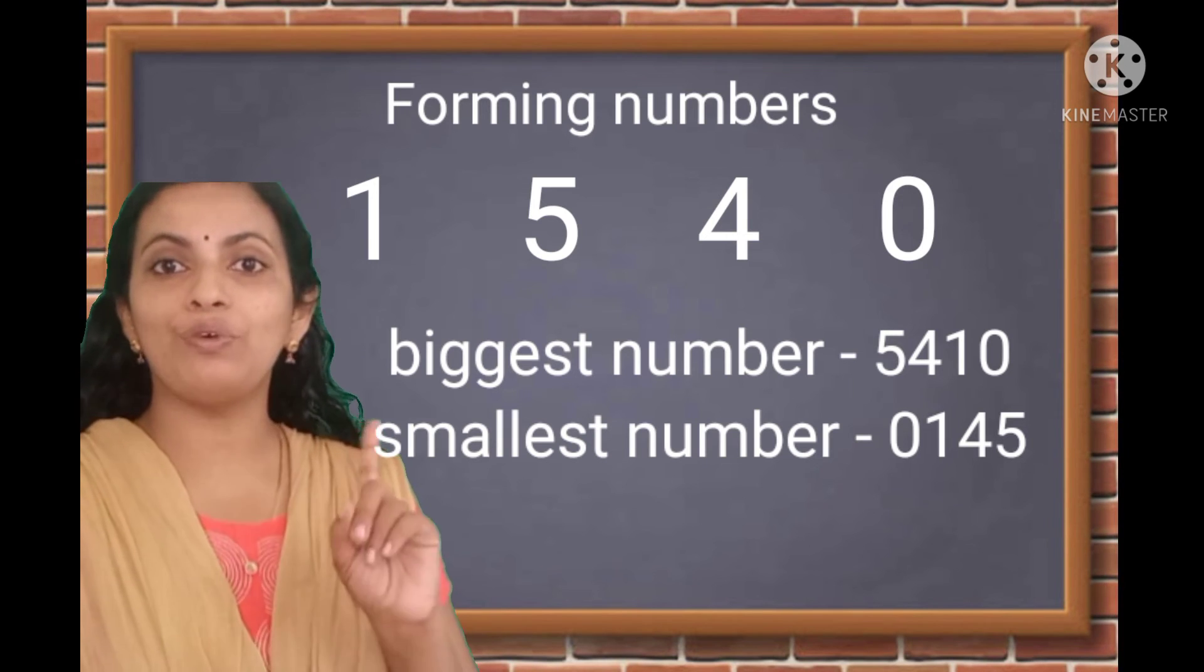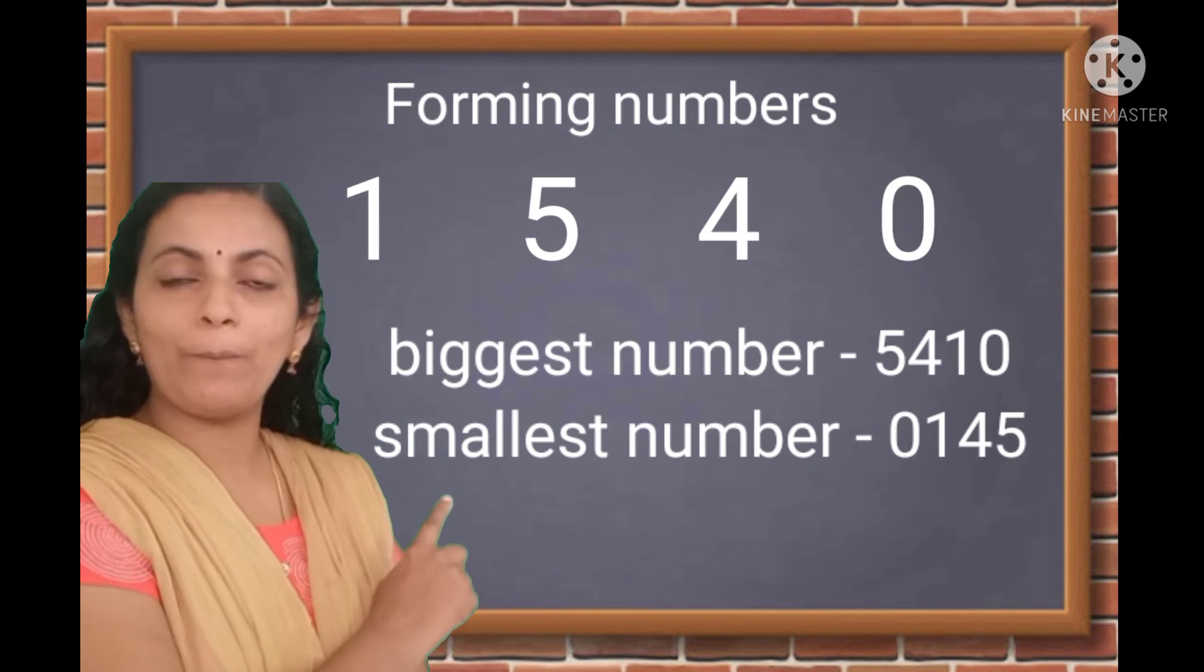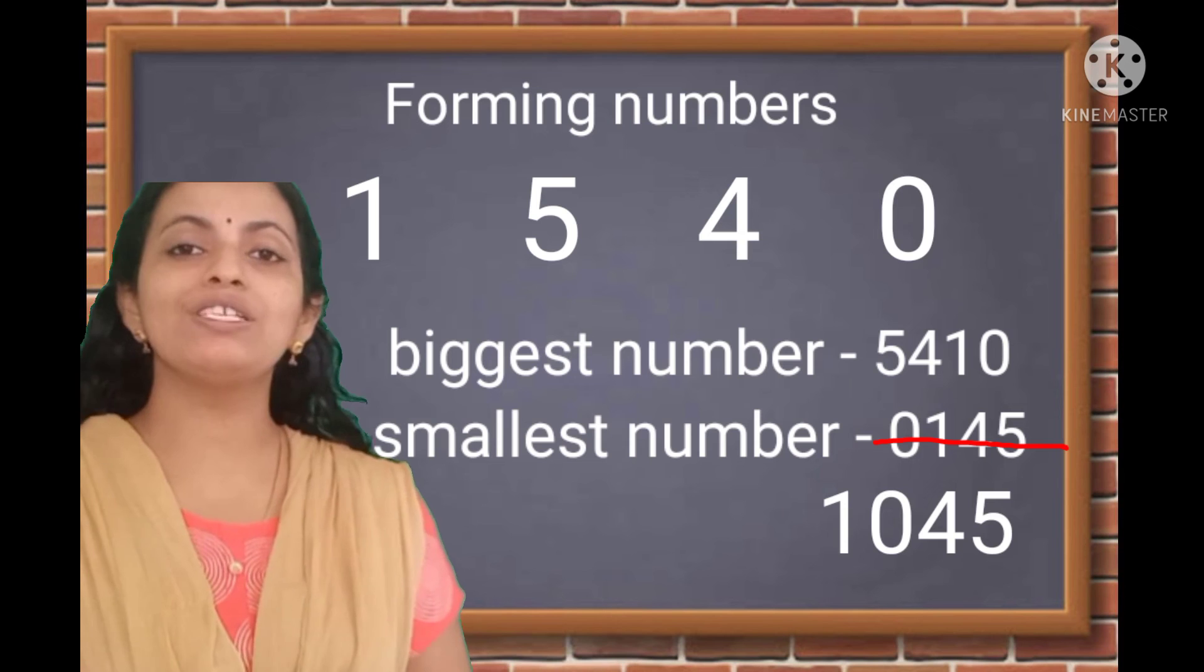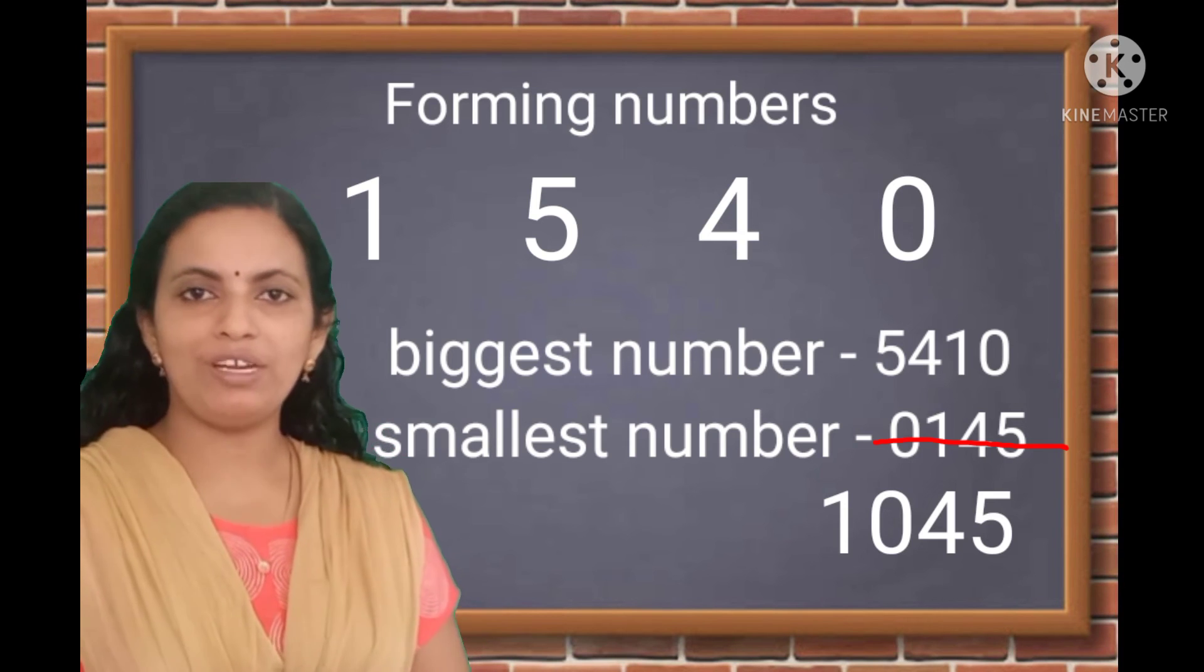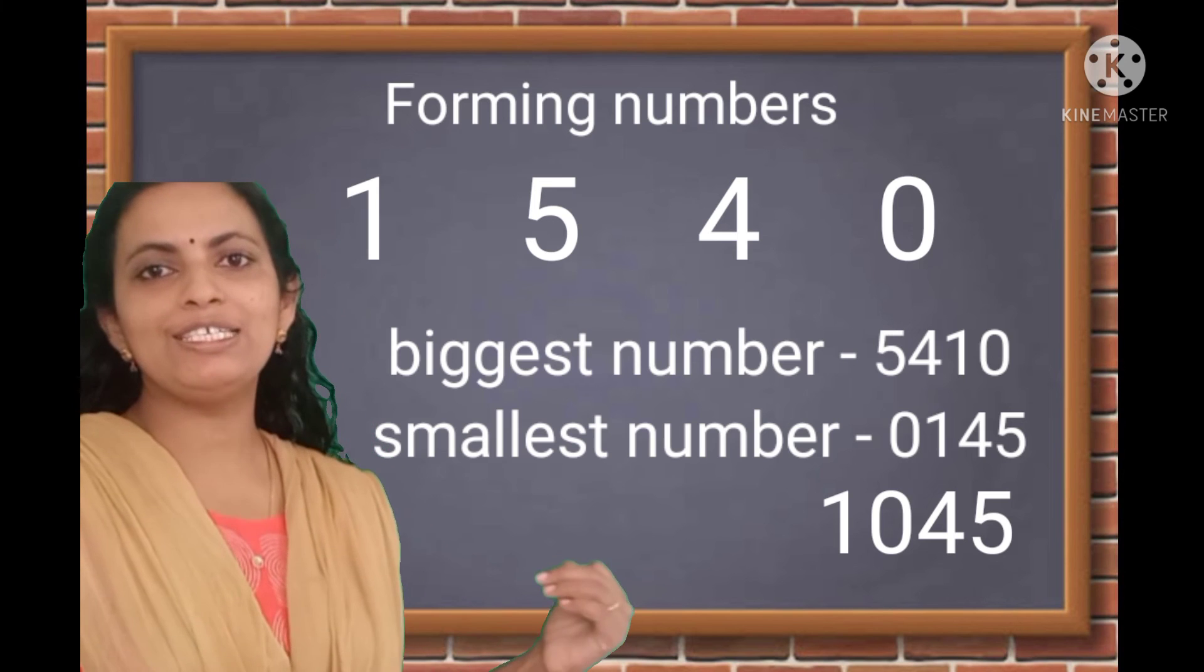So, to get the four digit number, we have to change the place of this 0. Zero, we have to keep in the second place. So, 1045 is the smallest four digit number formed by these four digits.